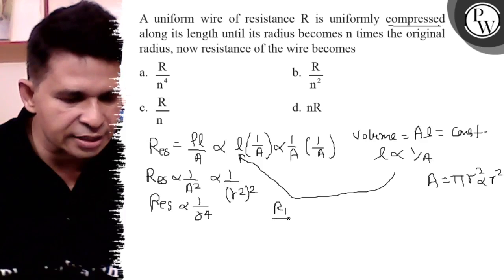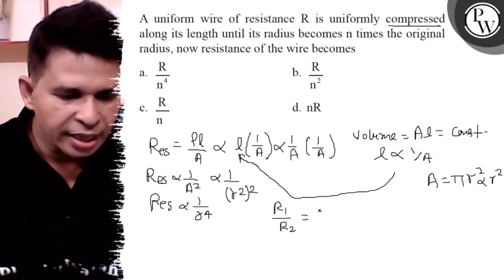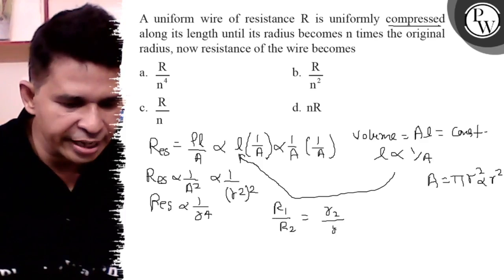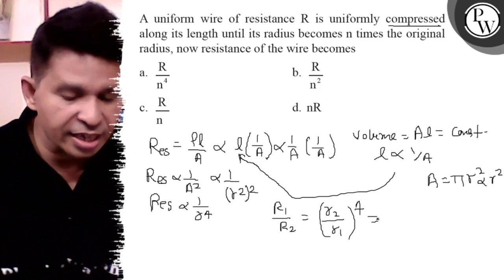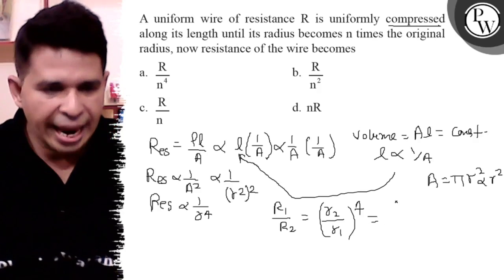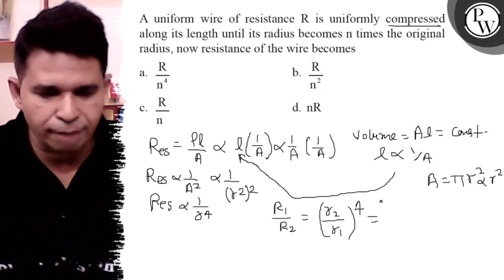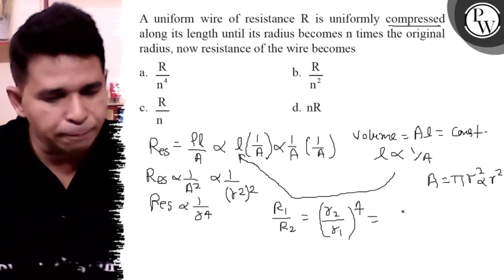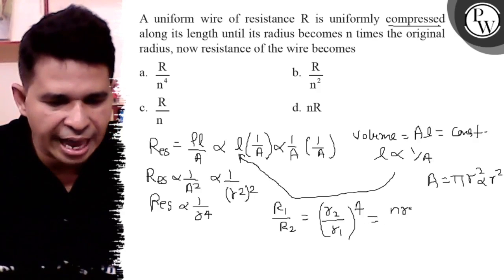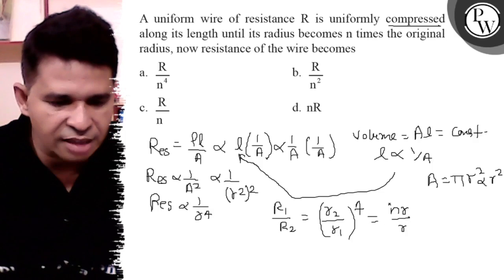Resistance 1 upon resistance 2 is (radius 2 upon radius 1) to the whole power 4. So definitely resistance 2 is n times because here compression is there. In compression radius is increased to nR and R₁ is R.